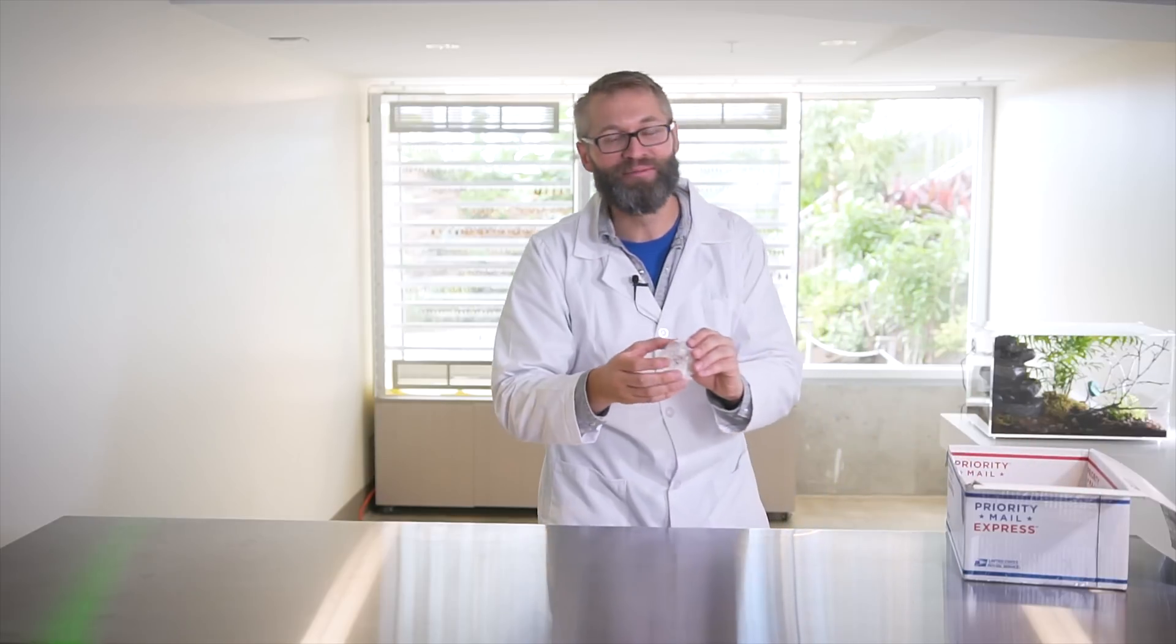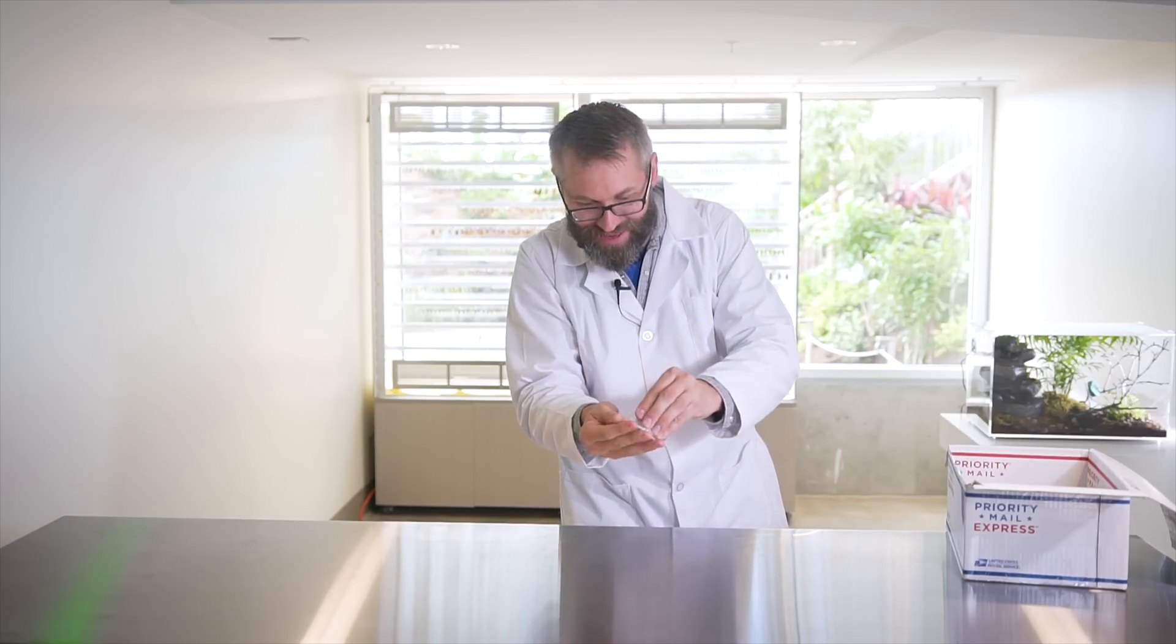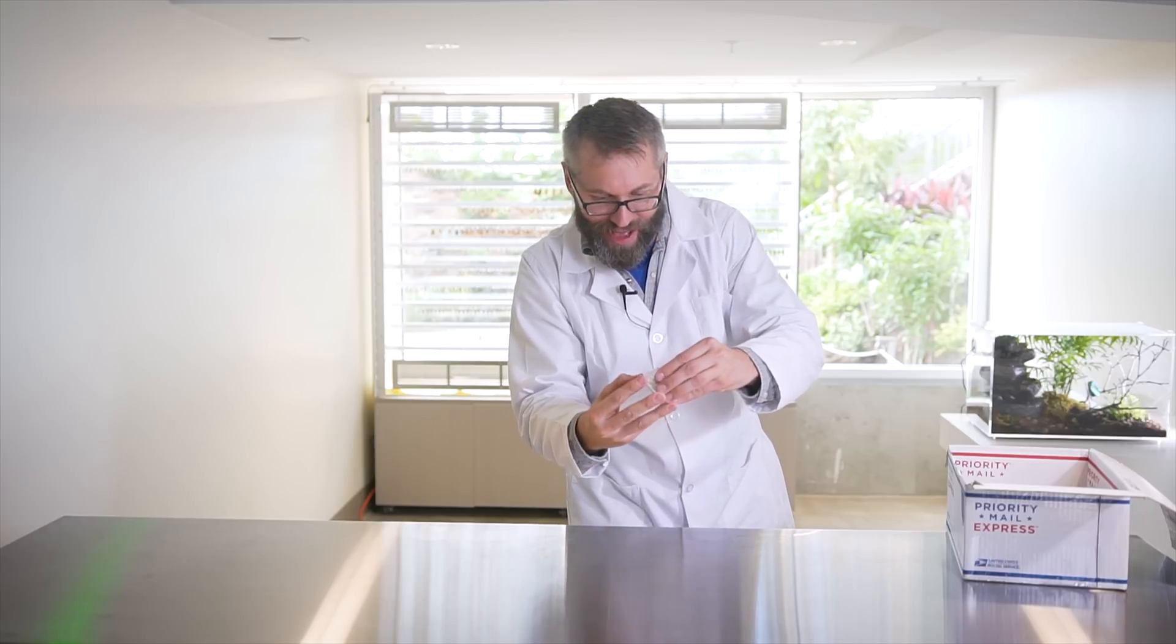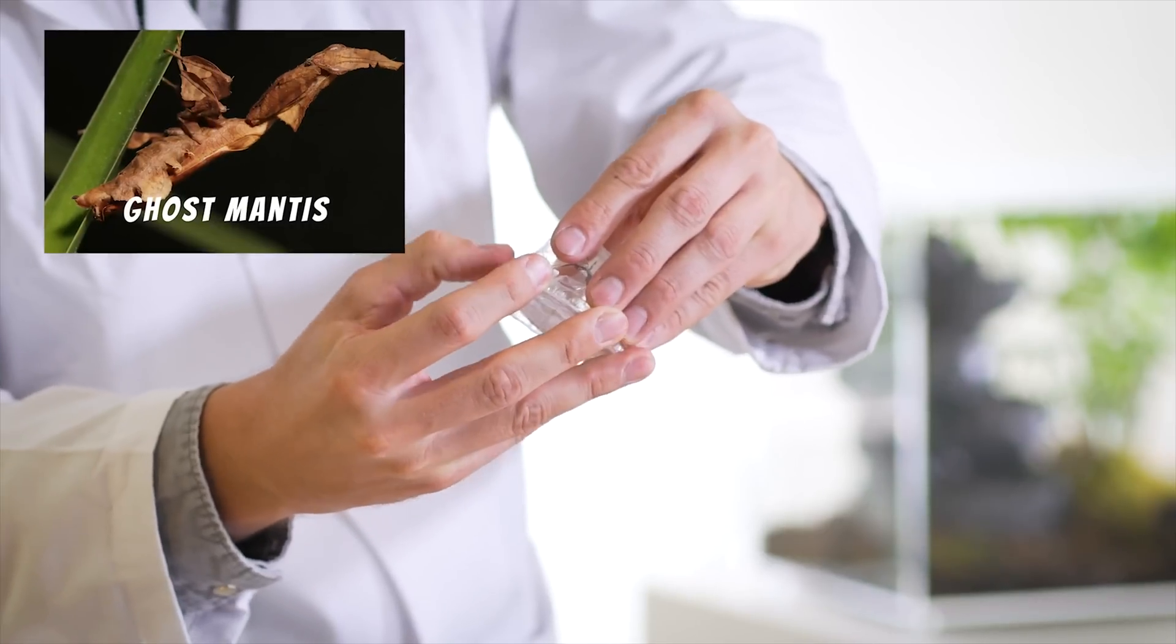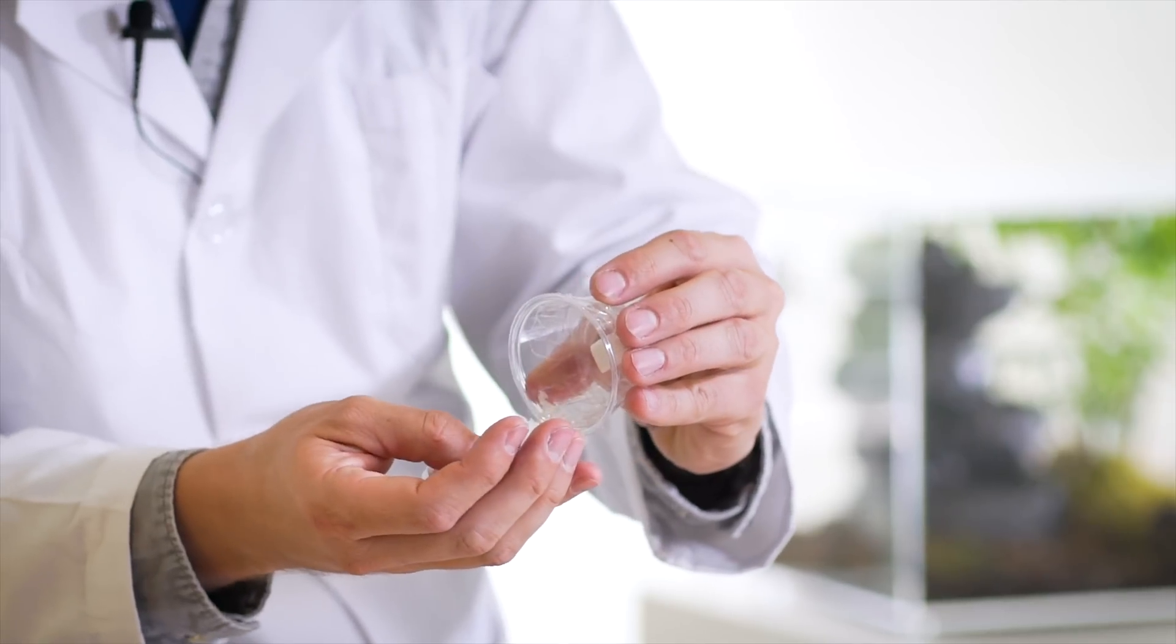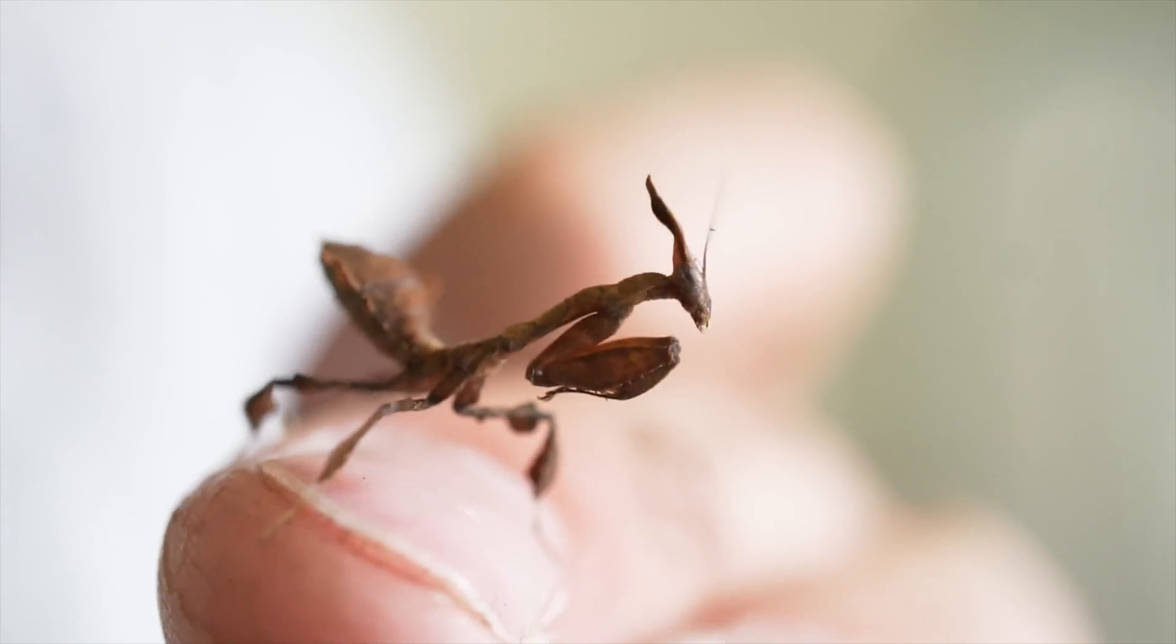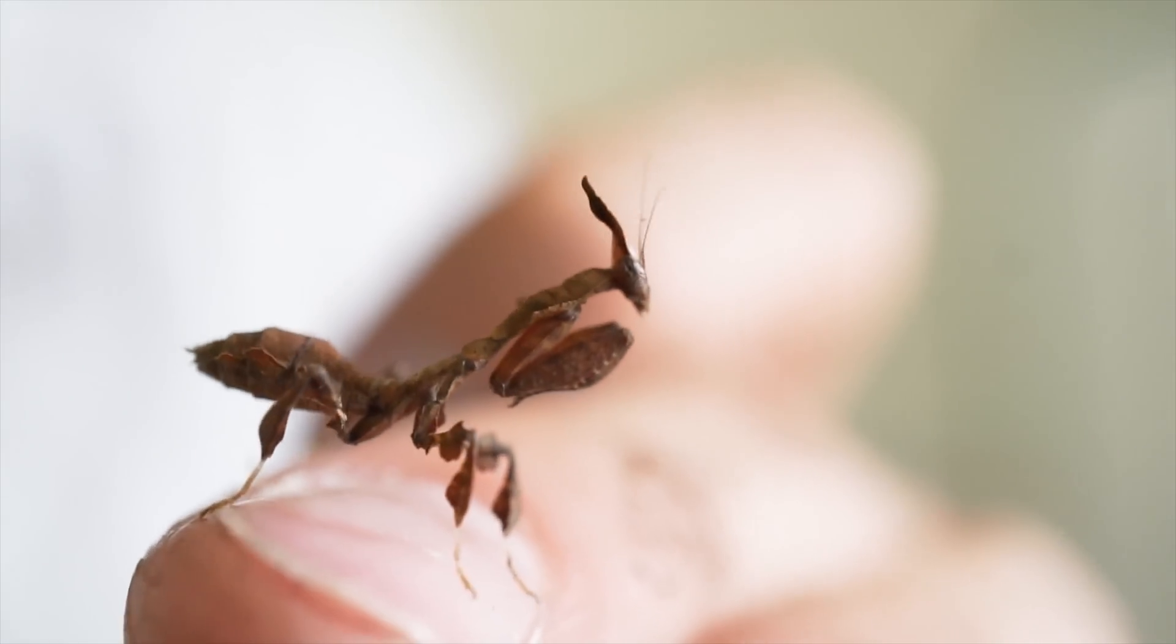Next. This is unbelievable. This is an amazing mantis from all over Africa called a ghost mantis. Look at that little guy. Now this is a juvenile, so she's going to get bigger than this. But this is one of the smallest praying mantises around.